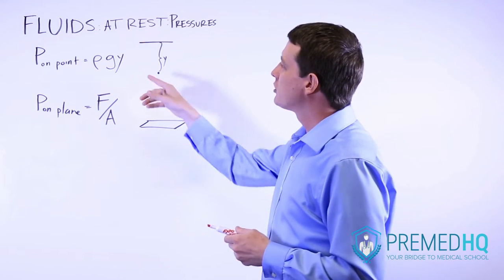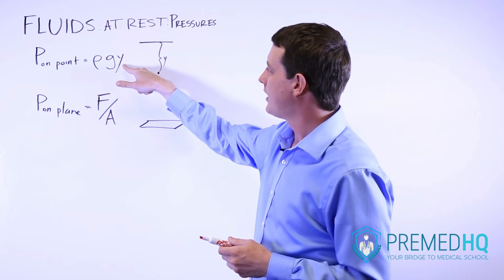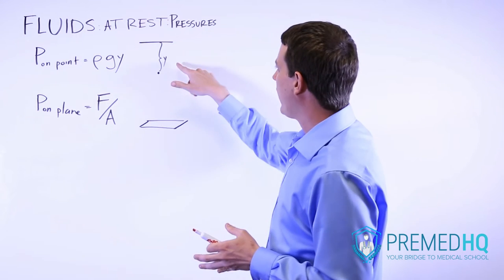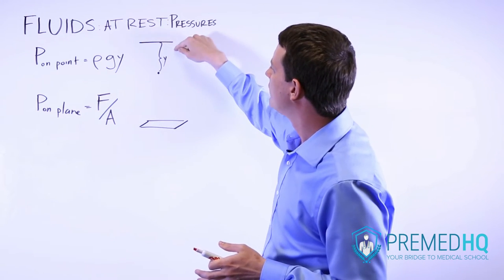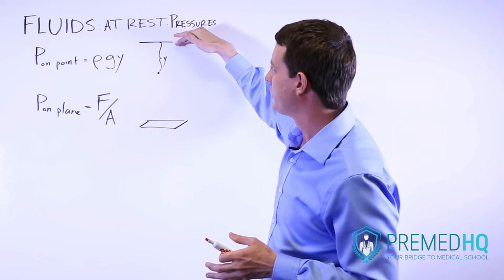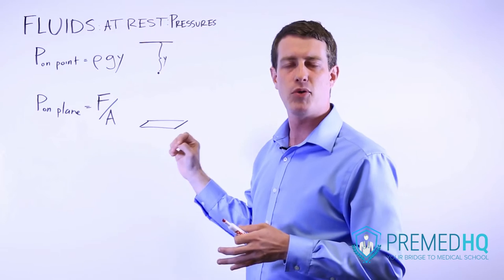Now the pressure on any one point is equal to rho times g times y. Where rho is the density of the material and y is the height of the material above that point. So if we were underwater, for example, here, y would be the height of the water column above that point.